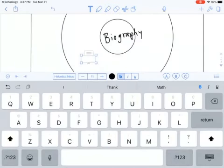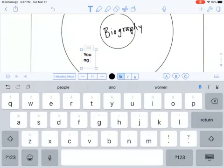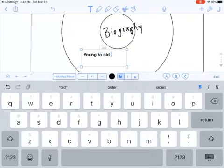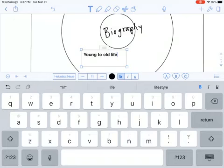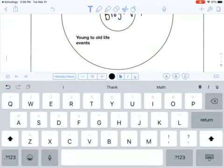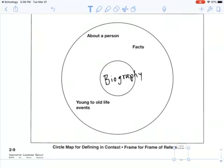Here comes another one. I'm going to do young to old life events. And remember, events means like parts. So parts of their life, but like from young to old. Kind of talks about that. What else did it talk about?